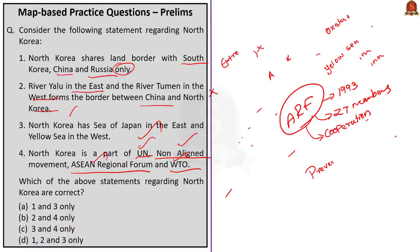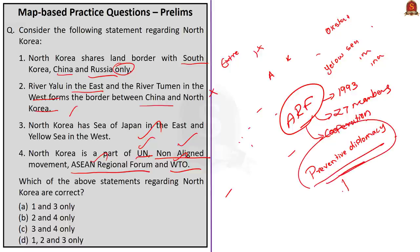Preventive diplomacy is the action to prevent disputes from arising between parties, or to prevent existing disputes from escalating into conflicts, or to limit the spread of conflict. This is a very useful term you can use in mains answers regarding geopolitical issues. So from the four statements, first and third are correct, making the correct answer option A.